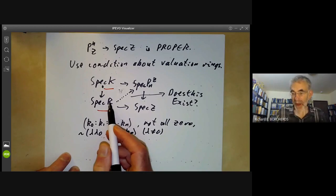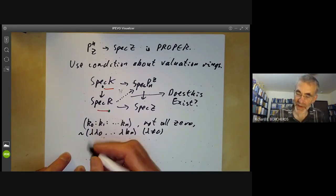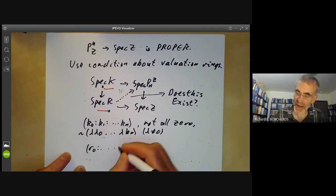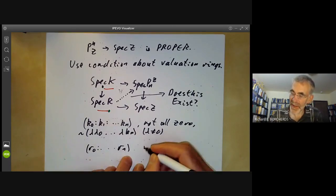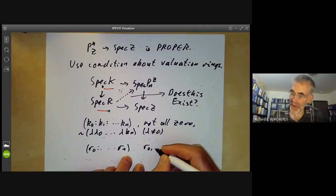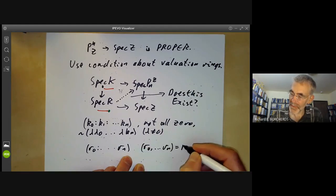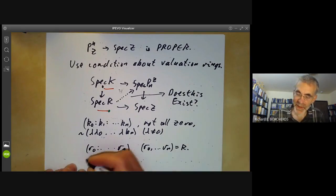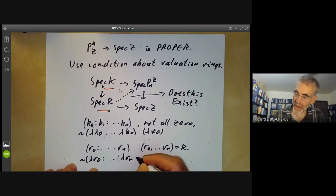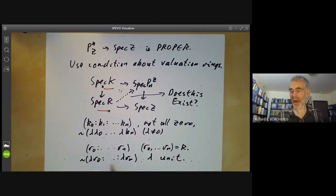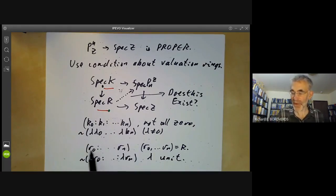So the ring R is a discrete valuation ring, and in particular is a local ring. So points here are described by tuples R0 up to Rn, where the ideal generated by R0 up to Rn is the whole of R. And again, this is equivalent to lambda R0 up to lambda times a unit. So what we're asking is, suppose we're given data K like this, can we find data R like this?